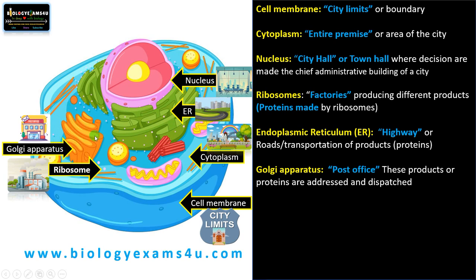Golgi apparatus — these are membranous vesicles — can be compared to the post office of the city where the products or proteins produced are chemically tagged or addressed and dispatched to different parts of the city. For example, if a protein is tagged with mannose-6-phosphate, it will be dispatched to the lysosome. If a protein has a nuclear localization signal, a specific sequence of amino acids, then that protein is targeted back to the nucleus. The protein products that reach the Golgi apparatus are chemically tagged and dispatched to different parts of the cell, just like a post office.